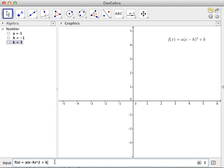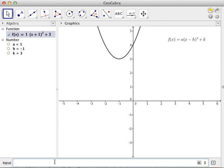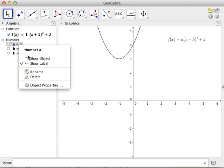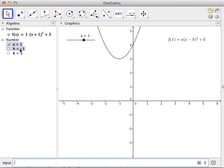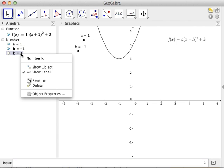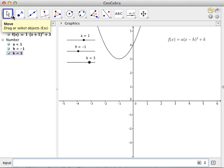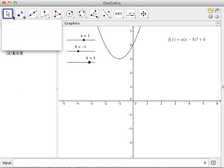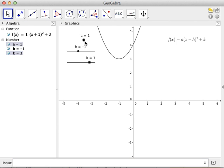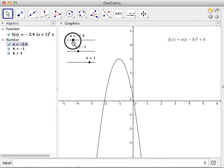What happens if we change the values of a, h, and k? We can do this by typing or we can show the values or show the sliders of these variables.